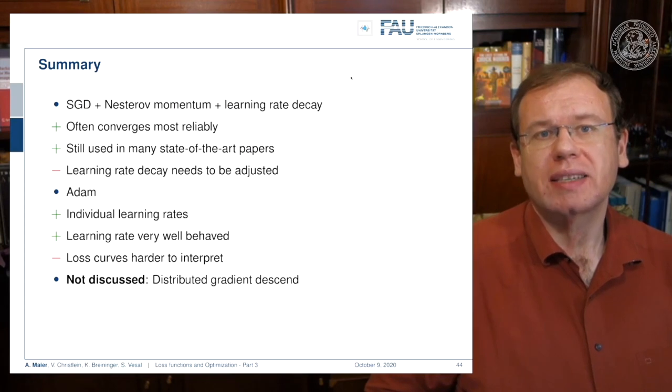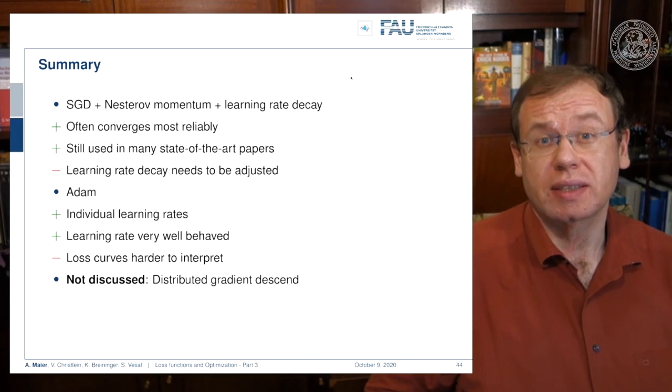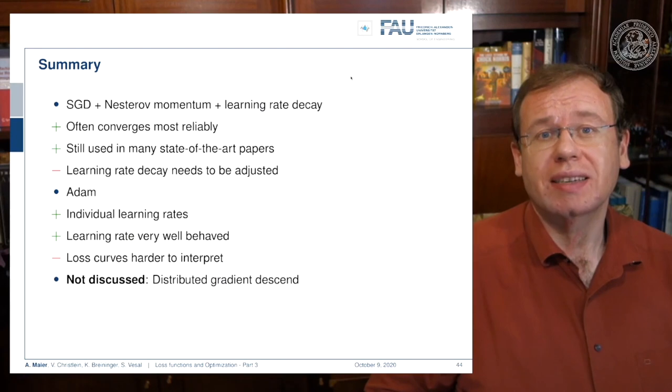Okay, let's summarize this a bit. The stochastic gradient descent plus Nesterov momentum plus learning rate decay is a typical choice in many experiments. It converges most reliably and is used in many state-of-the-art papers. Still it has the problem that this learning rate decay has to be adjusted. Adam has individual learning rates—the learning rates are very well behaved, but of course the loss curves are much harder to interpret because you don't have this typical behavior as you would see with fixed learning rates.